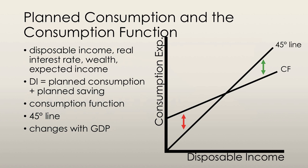Autonomous consumption is the amount of consumption that would take place in the short run even if people had no current income. Think about it — if you don't have a job, you still need to eat, you still need a place to stay, you still need to drink water, you still use electricity and whatnot. So you're still going to be spending a certain amount of money despite the fact that you don't technically have an income. And that's why we have something known as autonomous consumption.